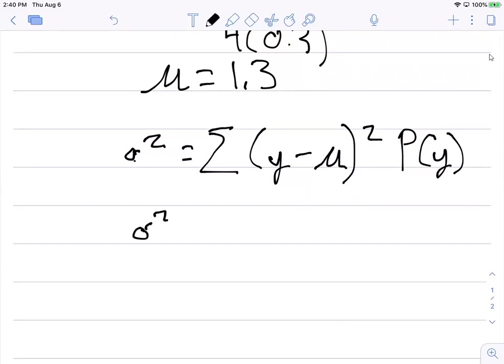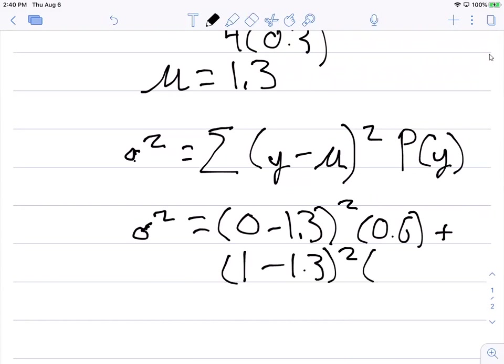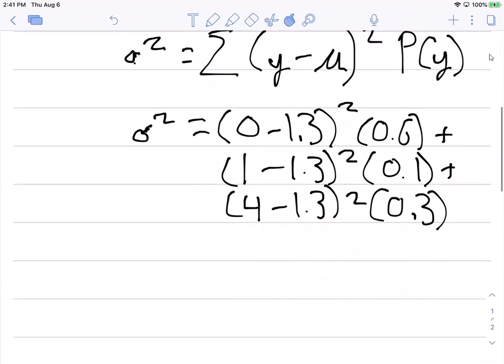Here we can do the same thing. Our sigma squared value is going to equal 0 minus 1.3 squared times 0.6 plus 1 minus 1.3 squared times 0.1, 0.3. That will get us the calculation for the variance.